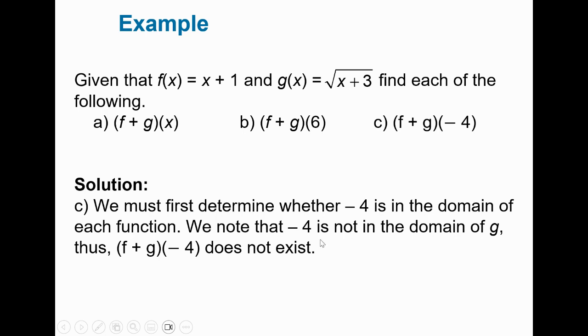For letter c, he says first we need to determine whether f of negative 4 is in the domain here. Notice if I put in place of x negative 4, negative 4 plus 3 is negative 1. The square root of negative 1 is an imaginary number. We note that negative 4 is not in the domain of g. Therefore, f plus g of negative 4 doesn't exist because g of negative 4 is an imaginary number. So be careful of that.